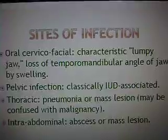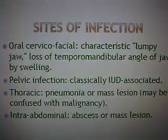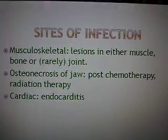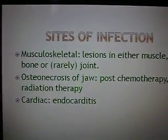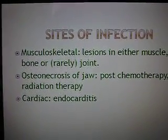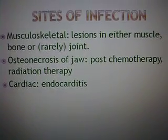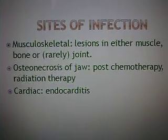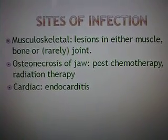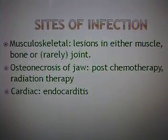Actinomycosis can also be found in the thoracic region and also the intra-abdominal region, and this is usually denoted by extreme and massive lesions. Another site for the infection is the musculoskeletal region, denoted by lesions on the muscle, bone, and joints — however, this is a really rare case. Actinomycosis of the jaw also occurs after post-chemotherapy and radiation treatment. Individuals who have suppressed immune systems for any reason are susceptible to getting this infection. Another site of infection could also be in the cardiac region, and this is endocarditis.